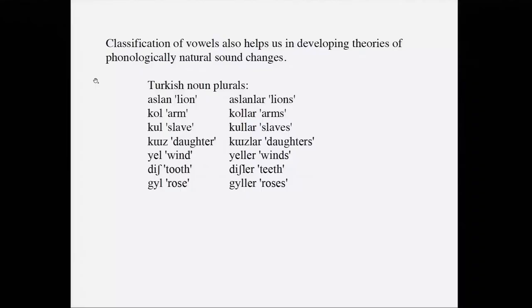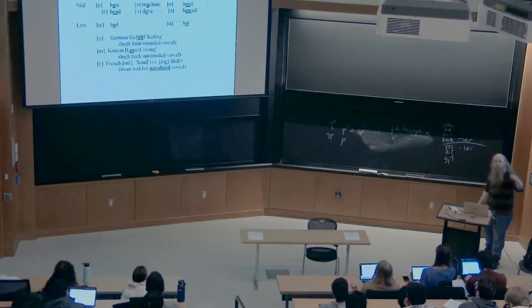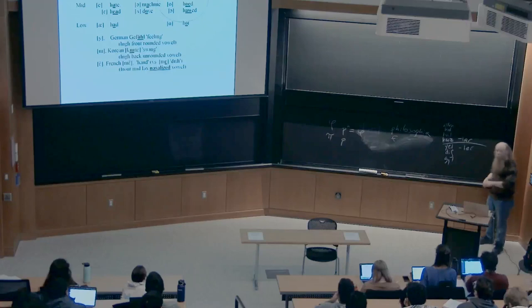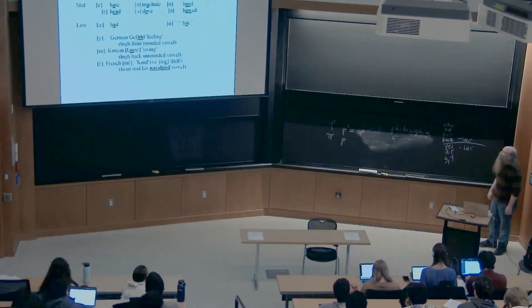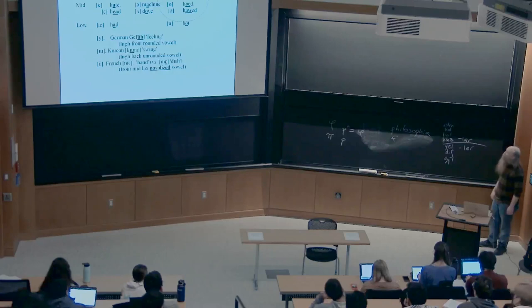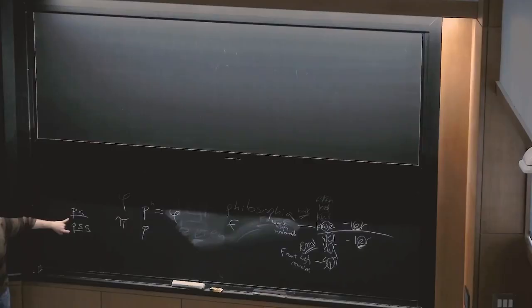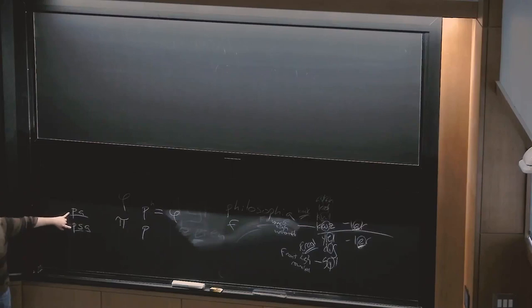Why do we get '-ler' with some nouns and '-lar' with others? A student answers: this is an example of vowel harmony — many languages have a suffix whose vowel changes to harmonize with the vowel in the root. The instructor confirms: well said. What do the vowels in '-ler' words have in common, and what do the '-lar' vowels have in common?